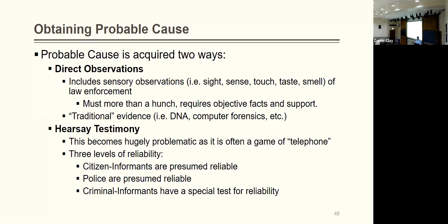Direct observation also includes what we consider traditional evidence — evidence of a crime being committed or a person committing it. This includes police lab work such as DNA analysis and computer forensics. For instance, observing that the DNA from a perpetrator's blood matches the DNA at the crime scene — that's a direct observation by law enforcement personnel, even though it involves lab testing.